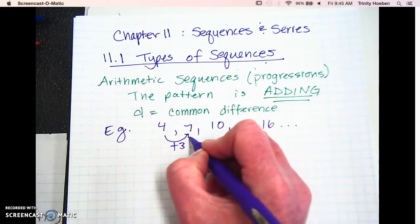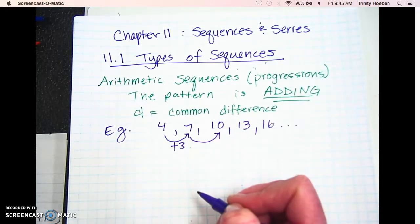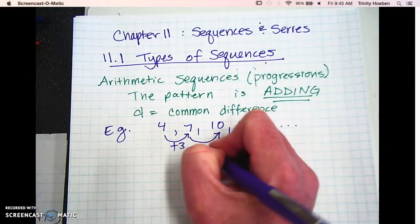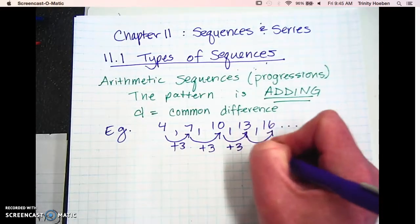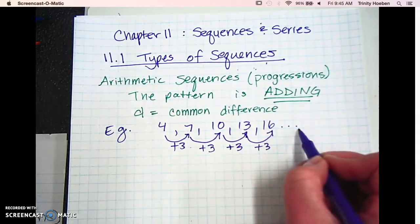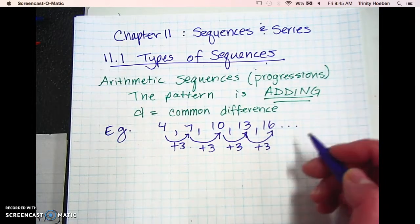So you would add 3. And then from 7 to 10, also add 3. 10 to 13, also add 3. 13 to 16, also add 3.